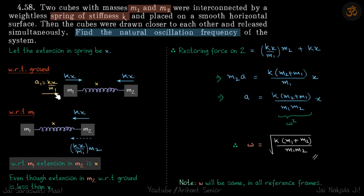Now when we analyze with respect to m1, pseudo force on m2 will be m2 times a1, that is m2 times kx by m1 in the opposite direction, and the original force is of course kx.